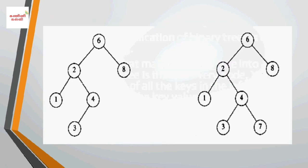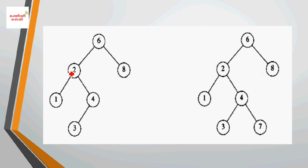Let's look at a binary search tree example. The root value is 6. The nodes to the left of 6 are 1, 2, 4, 3 — all less than 6, so they are correct on the left. To the right, 8 is greater than 6, so the right node is correct.